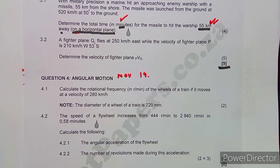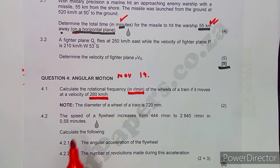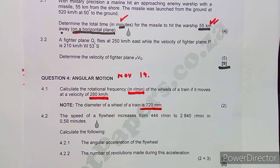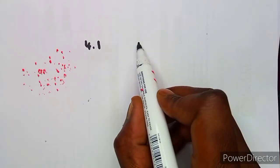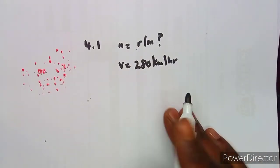On question 4.1, we are given: calculate the rotational frequency in revolutions per minute of the wheels of a train if it moves at a velocity of 280 kilometers per hour. Note that the diameter of the train wheel is 720 millimeters. First, let's list the information — it will be easier to know what you want and how to approach it. We do not know n in revs per minute, but we are given the linear velocity of 280 kilometers per hour, which we need to convert to meters per second.